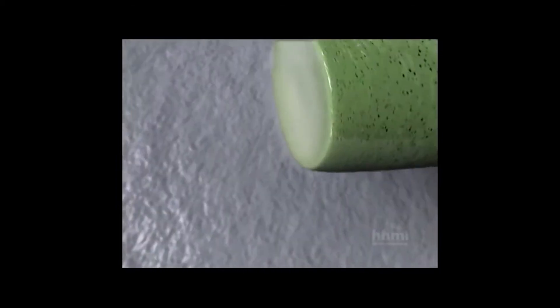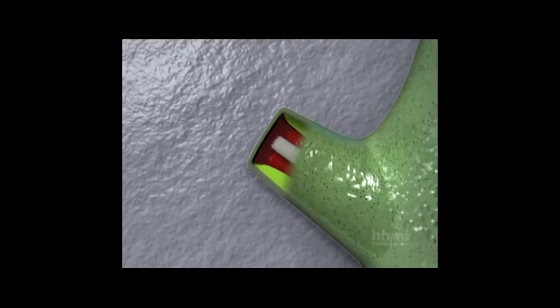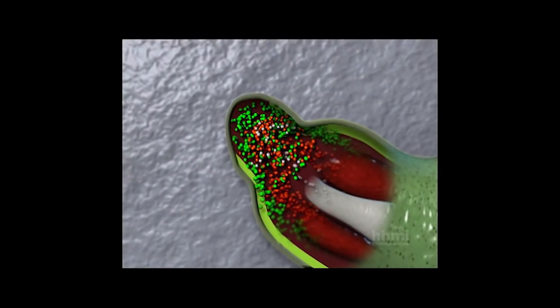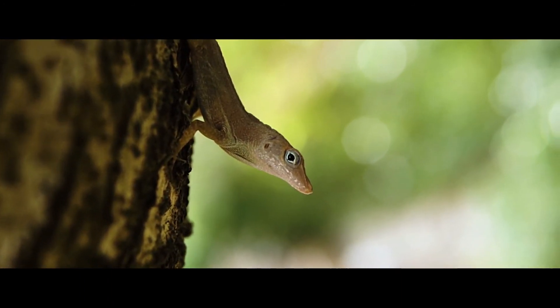The axolotl, a Mexican salamander that is now all but extinct in the wild, is a favorite model in regenerative medicine research because of its one-of-a-kind status as nature's champion of regeneration. While most salamanders have some regenerative capacity, the axolotl can regenerate almost any body part.